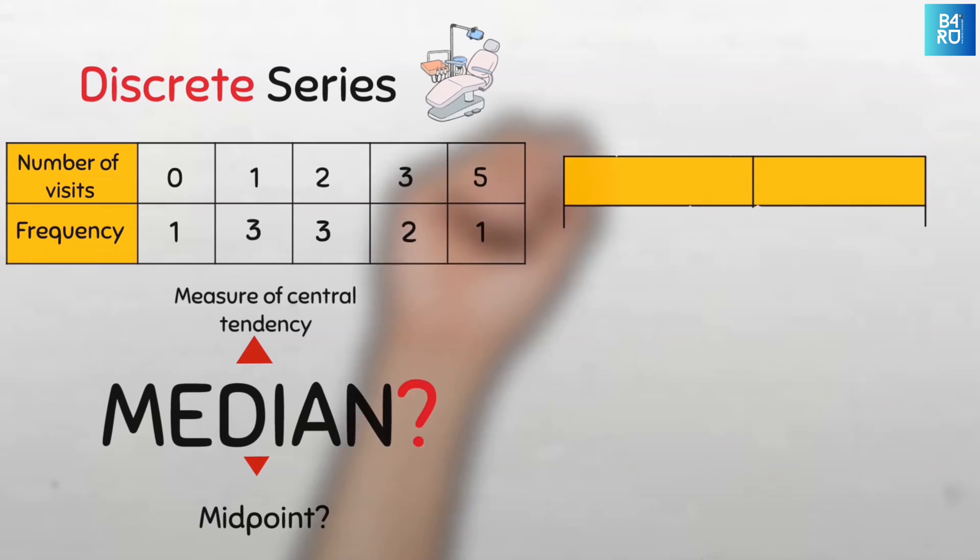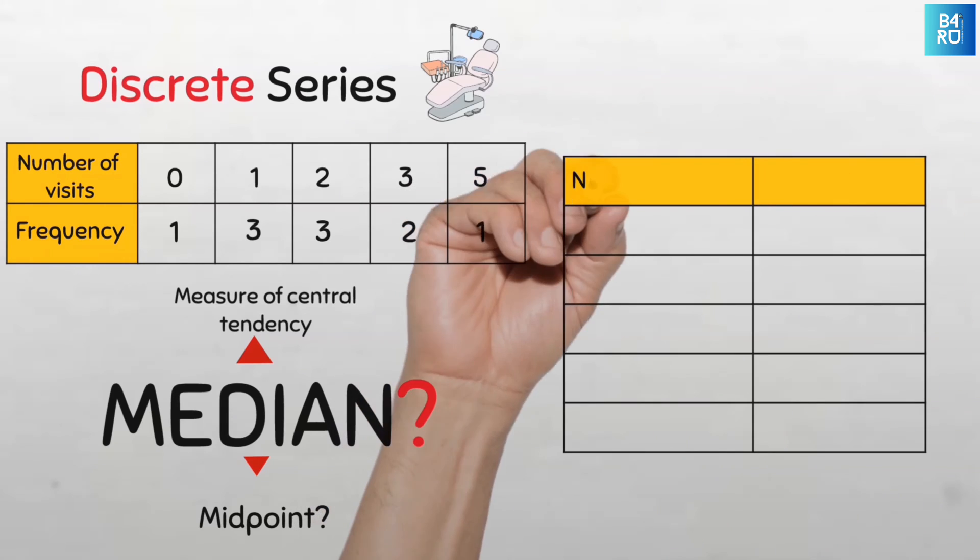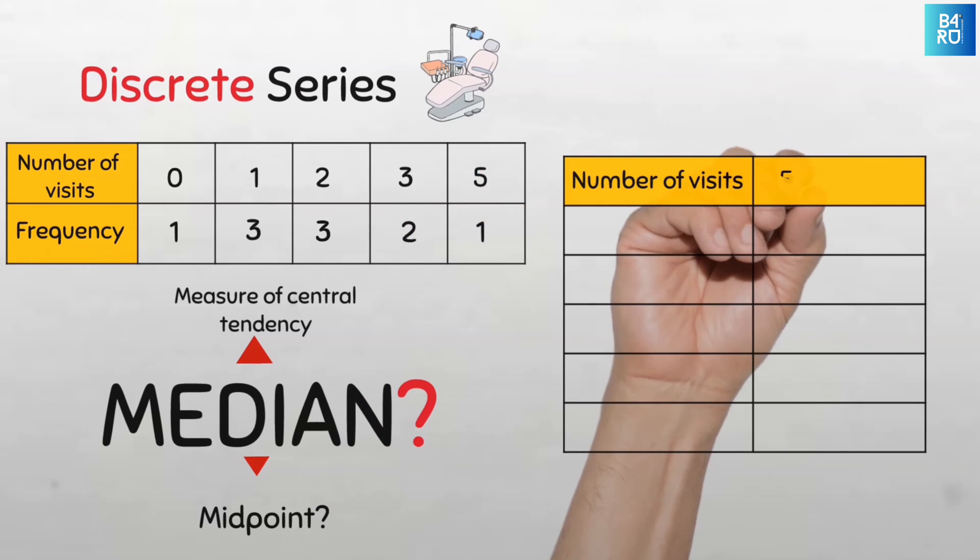Let's first modify this table a bit to make it easy for us to compute. We'll put the number of visits here and then the frequency here, and then we can put in all the data arranged neatly in a vertical manner.